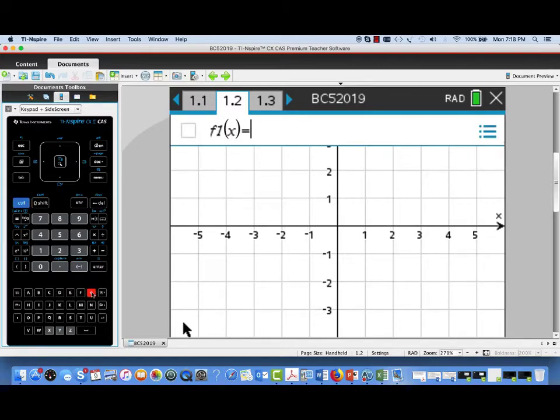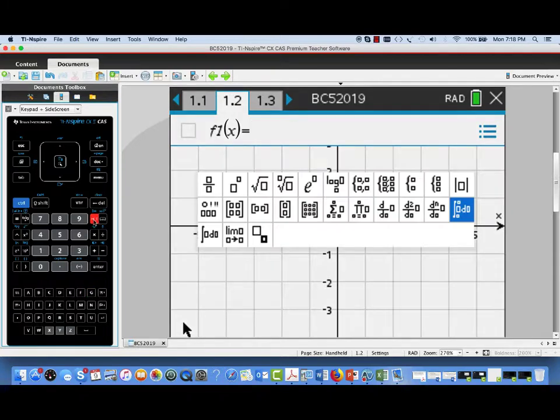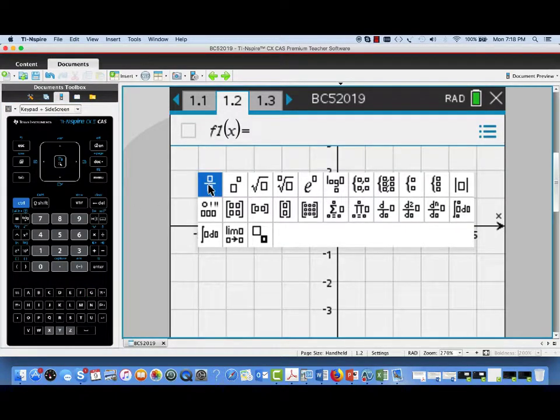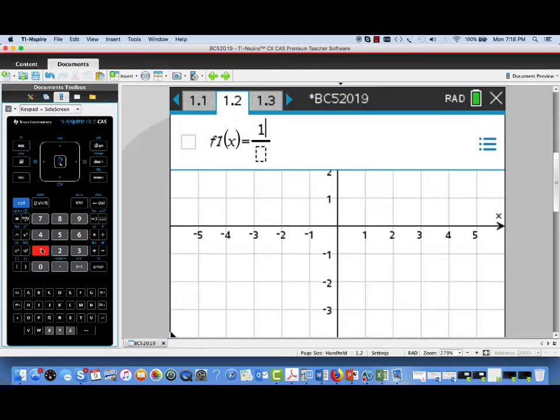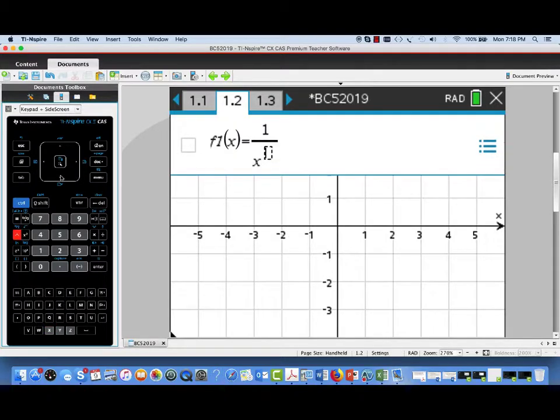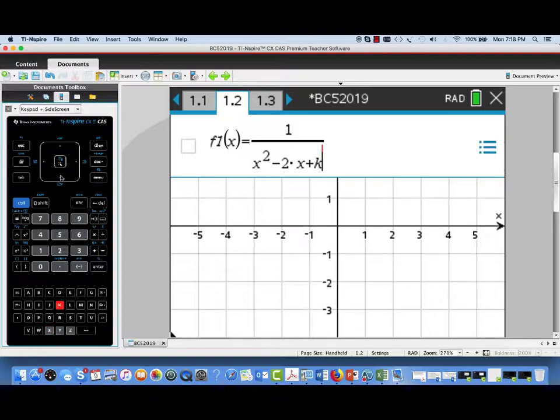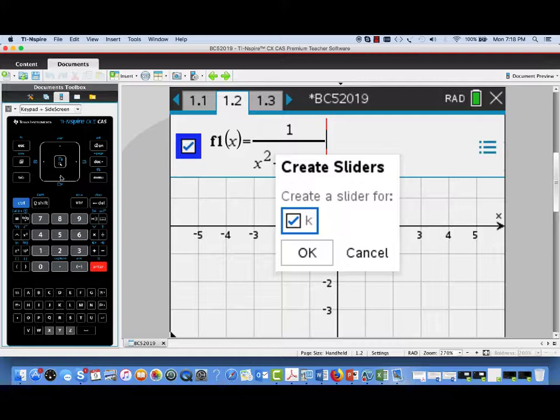I've pulled up a graph screen that actually has a grid added to it, and we're going to look at the family of functions that was under consideration in this problem. It's a rational function I'm going to enter into F1. The numerator is 1, and then we'll have a quadratic that has a parameter constant in it. That quadratic is x squared minus 2x plus a constant k, and it's that constant k that's providing a parameter.